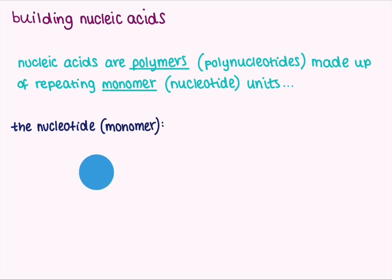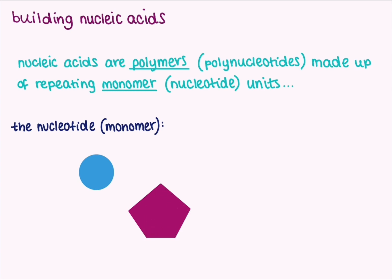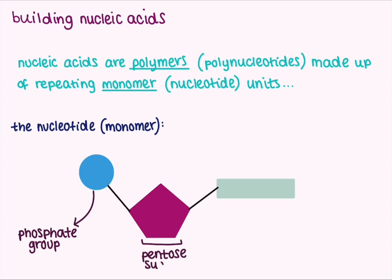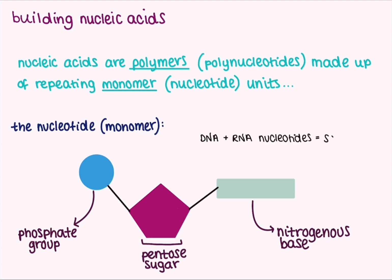This general structure is the same for both DNA and RNA. The standard nucleotide is made up of three separate subunits: the phosphate group, represented here by the circular shape; a pentose sugar — a simple monosaccharide made up of a five-carbon chain, represented by the pentagon shape; and finally a nitrogenous or nitrogen-containing base, represented by the rectangular shape. The phosphate group is attached to the fifth carbon in the pentose chain, and the nitrogenous base is attached to the first carbon.